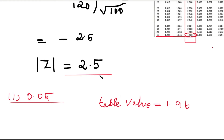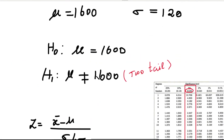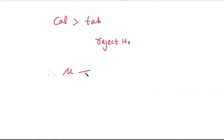In the first case, alpha equals 0.05, and the table value is 1.96. The calculated value is 2.5. Since the calculated value of Z is greater than the table value, we reject H0. Rejecting H0 means H1 has the answer. Therefore, mu is not equal to 1600. This is the conclusion for the first case.